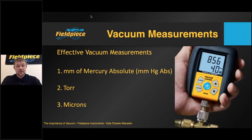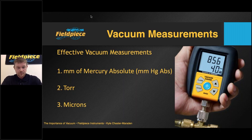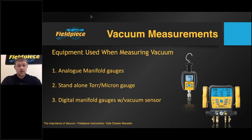Millimeters of mercury absolute covers the same range as those three units but on a much finer scale — the 29.9 inches of mercury commonly seen on traditional analog manifold gauges becomes 760 millimeters of mercury absolute. This range is more commonly referred to as the Torr scale. Gauges are available to measure pressures close to absolute, typically 0 to 20 and 0 to 40 Torr. Microns is also typically used, allowing an even finer scale with one Torr equating to 1000 microns, giving a clearer view of these very low pressures — for example, 856 microns displayed on the diagram.